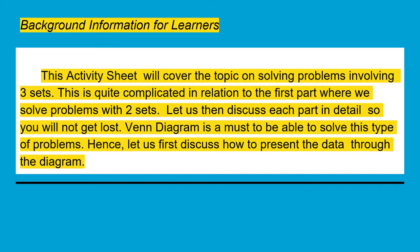Background information for learners: this activity will cover the topic on solving problems involving three sets. This is quite complicated in relation to the first part where we solved problems with two sets. Let us discuss each part in detail so you will not get lost. A Venn diagram is a must to be able to solve this type of problem. Let us first discuss how to present the data through the diagram.